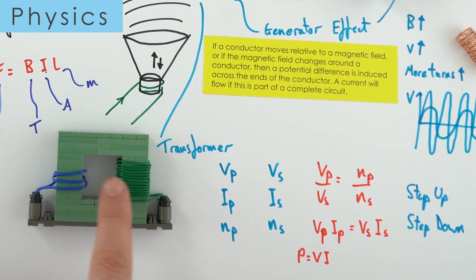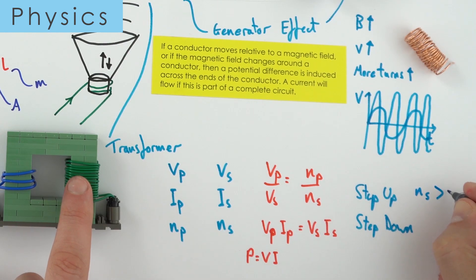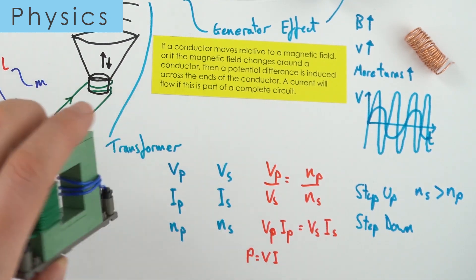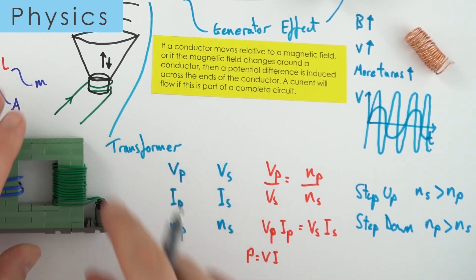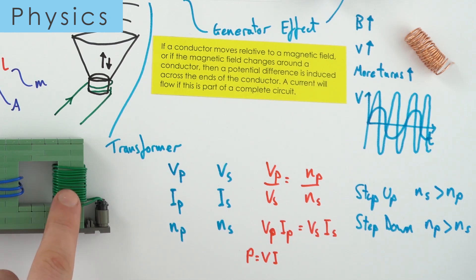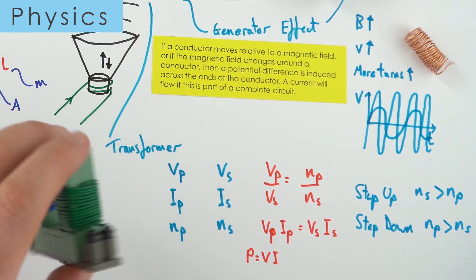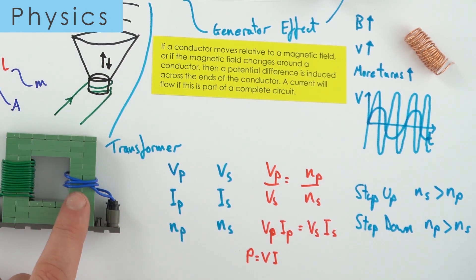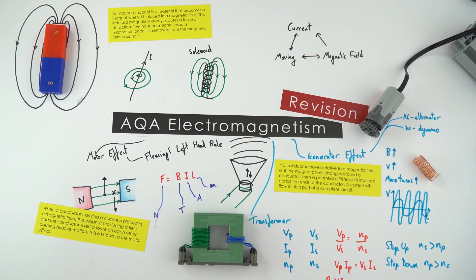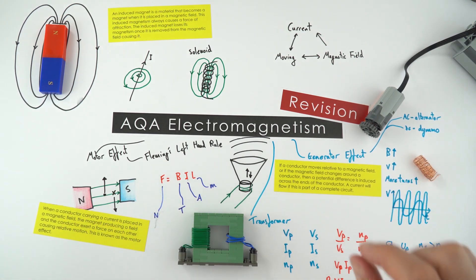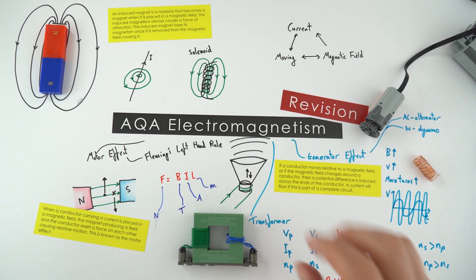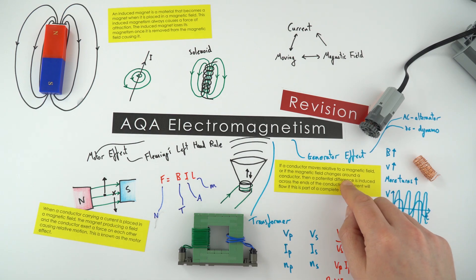On a step-up transformer, it steps up the potential difference, so there are more turns on the secondary coil than the primary. On a step-down transformer, there are more turns on the primary than the secondary. In the national grid, you step up the potential difference when leaving the power station to thousands of volts, then step it back down to 230 volts for use in our homes. That is a summary of AQA electromagnetism. For more detail on anything in this video, there will be videos at GCSEPhysicsOnline.com.